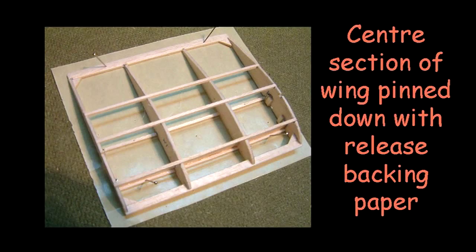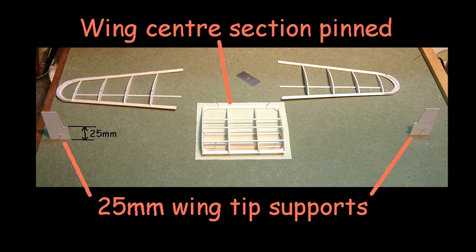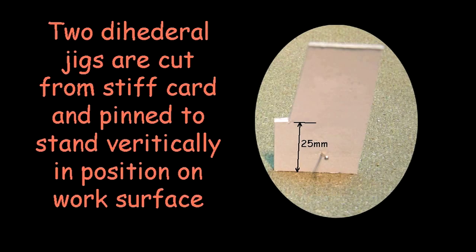I now had to join the outer wings to the centre section. The plan requires that each outer wing has a dihedral of 25mm from where it joins the centre section to its outer tip.